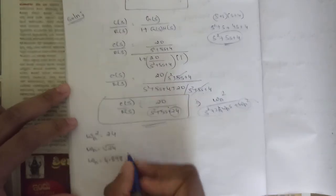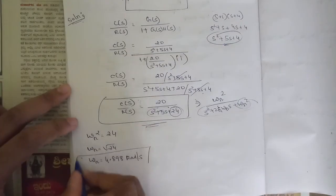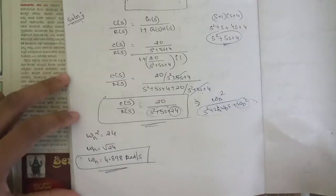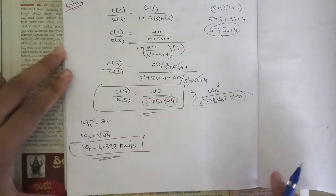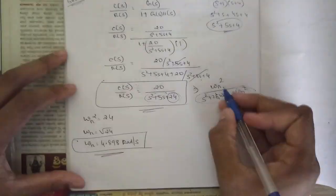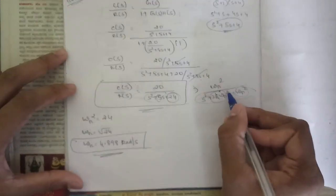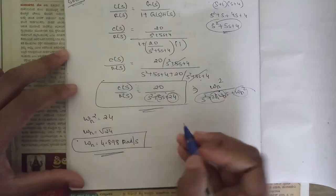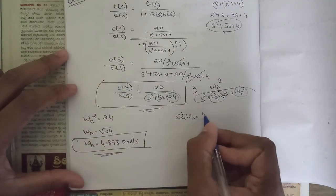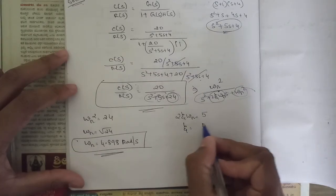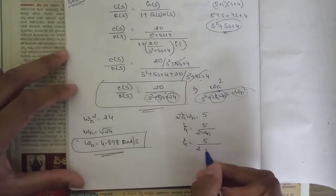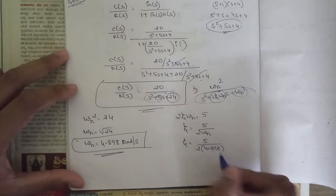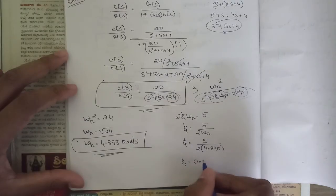ωn = 4.898 radians per second. This is our natural frequency. The coefficient of s in the denominator is 2ζωn, and here it equals 5. So 2ζωn = 5, which gives ζ = 5 / (2 × 4.898).